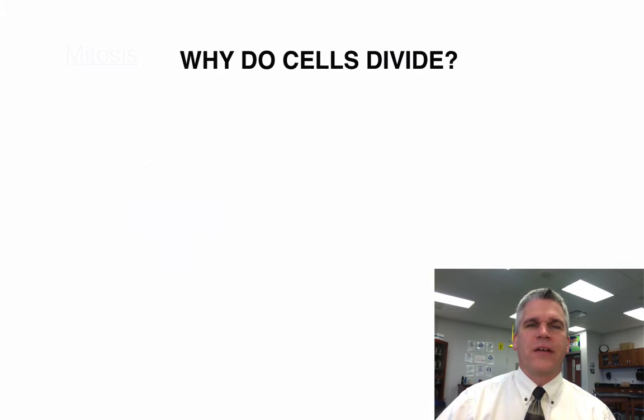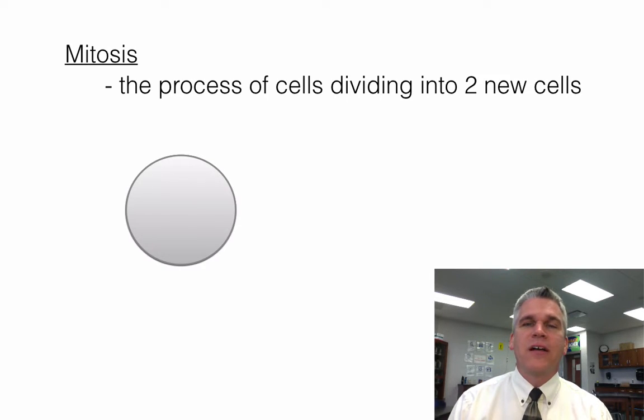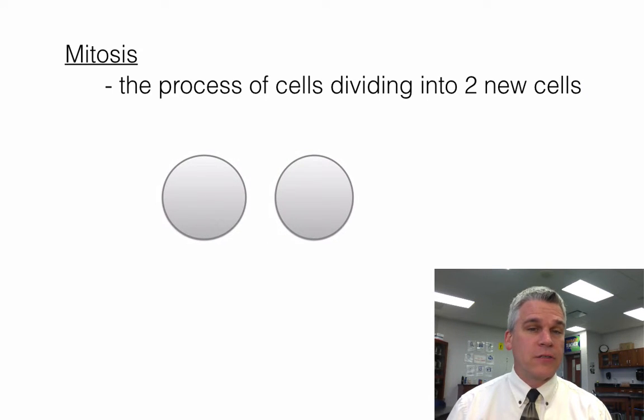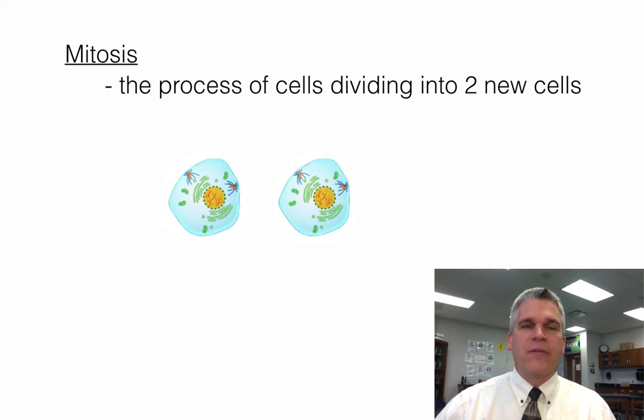Let's take a look at this process of cell division, otherwise known as mitosis. So mitosis is the process of cells dividing into two brand new cells. And when they divide in half, they're going to be half the size of the original cell. So let's substitute these two circles for some cells. And so this is just a diagram of these cells.